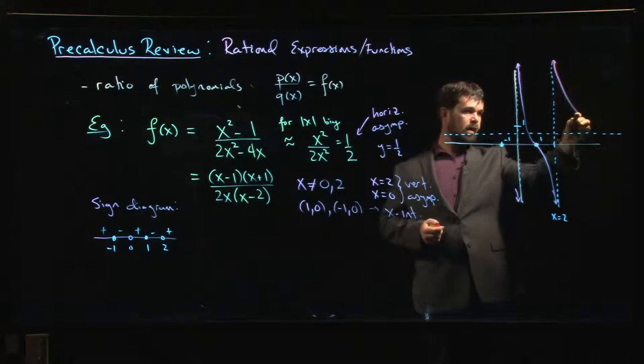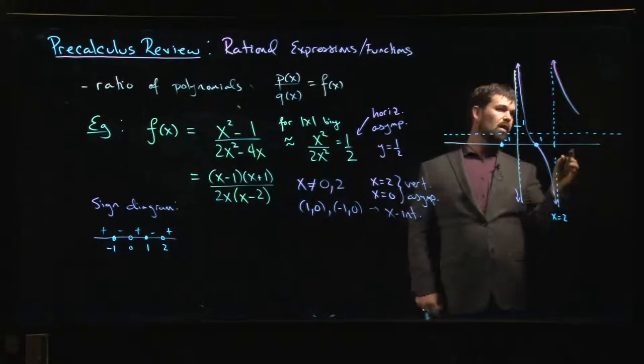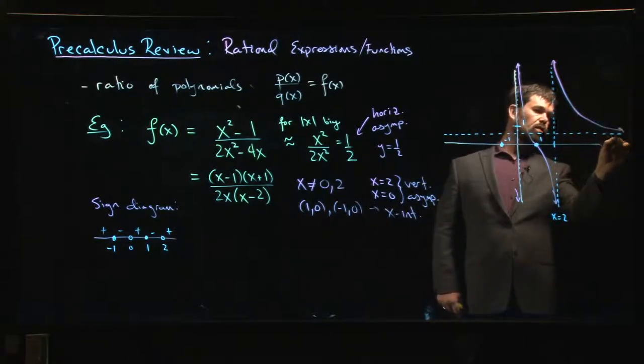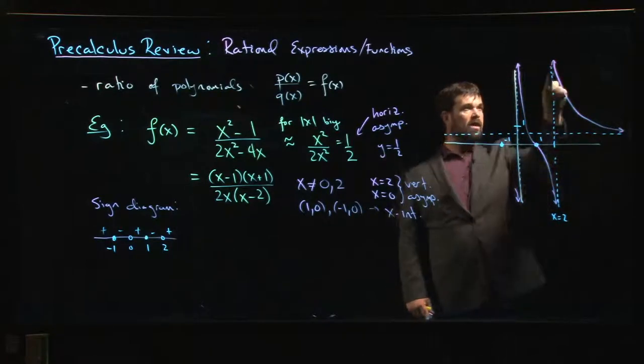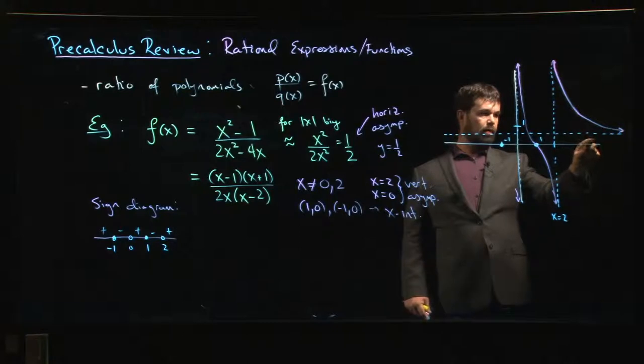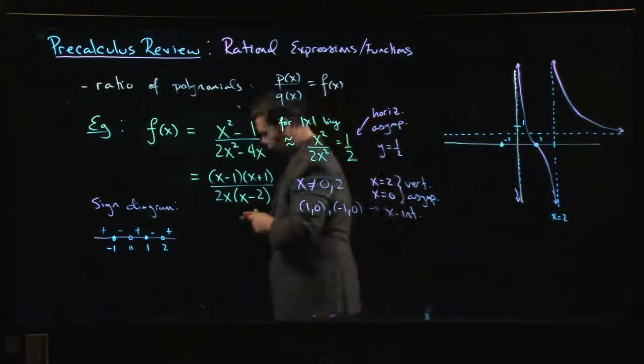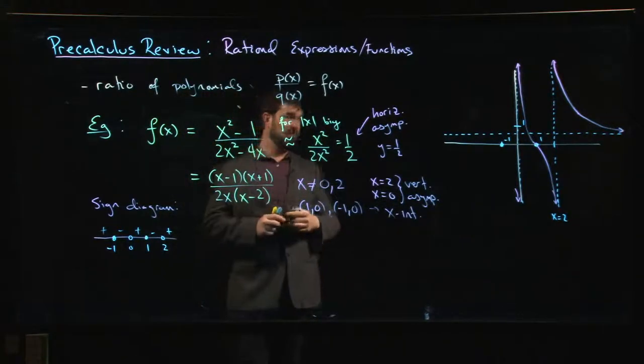Now here I'm just coming down. Now I know I don't cross the x-axis again because there is no other intercept, so most likely I'm going to come down and just approach that horizontal asymptote. Again there's some small possibility that I dip down just below the horizontal asymptote and come back up. Calculus would tell me whether or not that would happen, because if that happened there would have to be a minimum value.